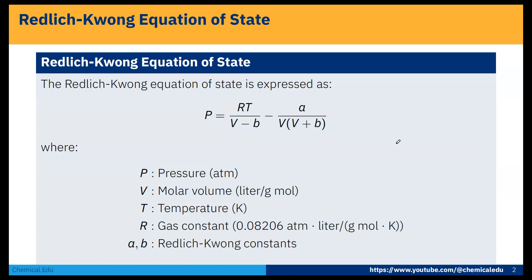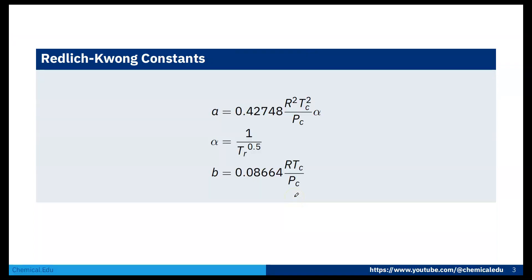Redlich-Kwong constant A is 0.42748 R squared Tc squared over Pc times alpha. Here alpha is 1 over Tr reduced temperature to the power 0.5. And B, the Redlich-Kwong constant, is 0.08664 R Tc over Pc.